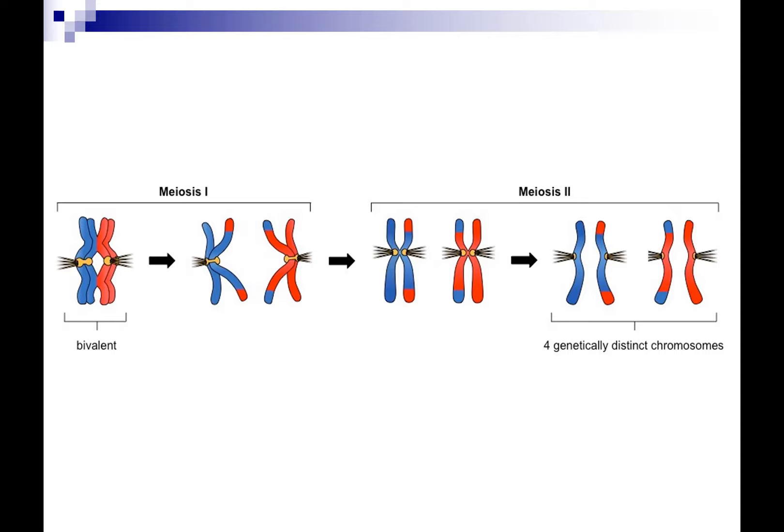I really like this image because it helps you see the difference between meiosis I and meiosis II — separating the homologous pairs versus separating the sisters.